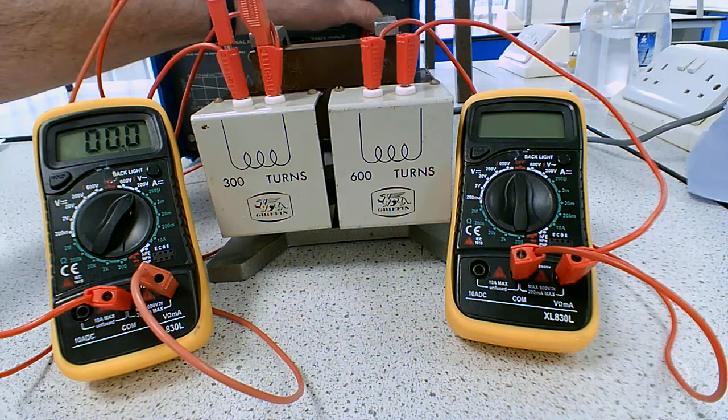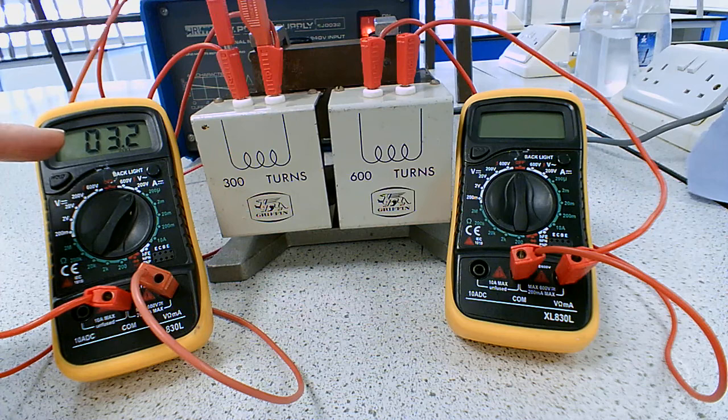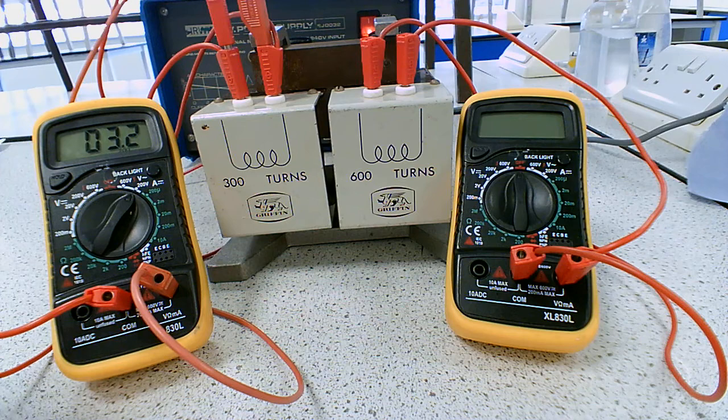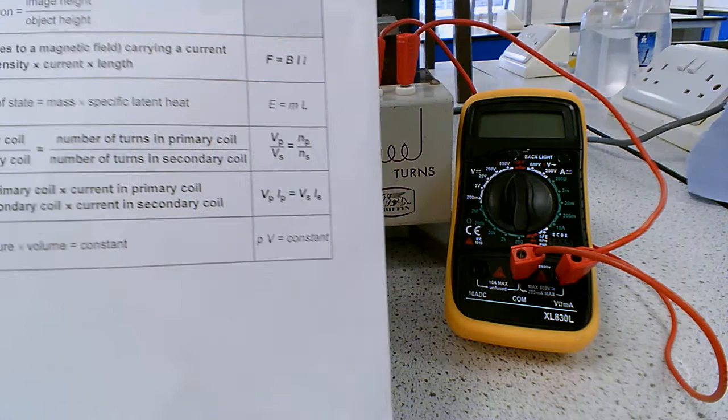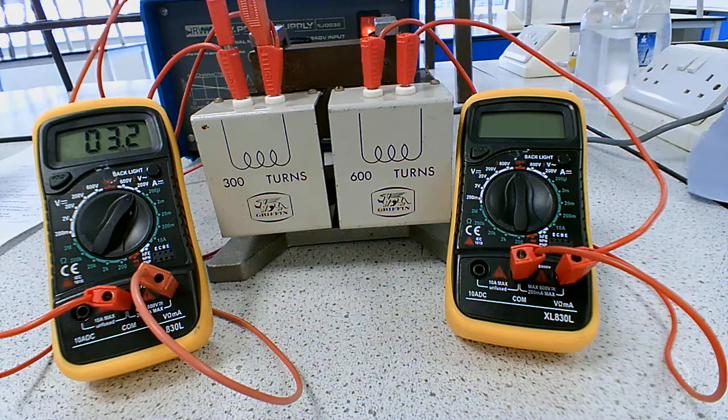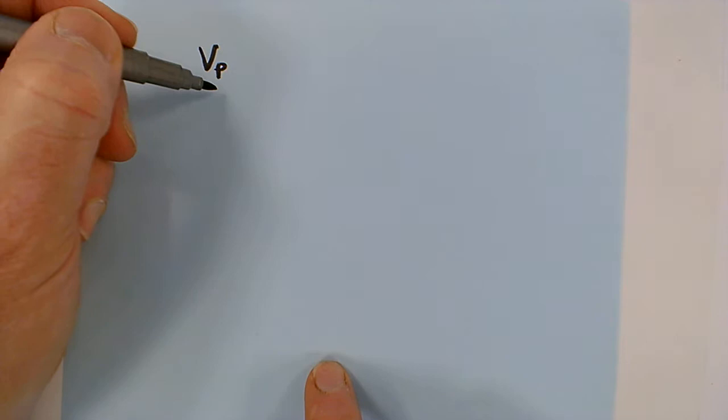So here we go. If I switch my power pack on you'll see that I've got a voltage or potential difference across the coil or the primary coil of 3.2 volts alternating current and I need to work out what it will be on the second one. So what we need to do is use a particular equation. I'm just going to move my camera so the first thing I'm going to do is write down the equation that I showed you.